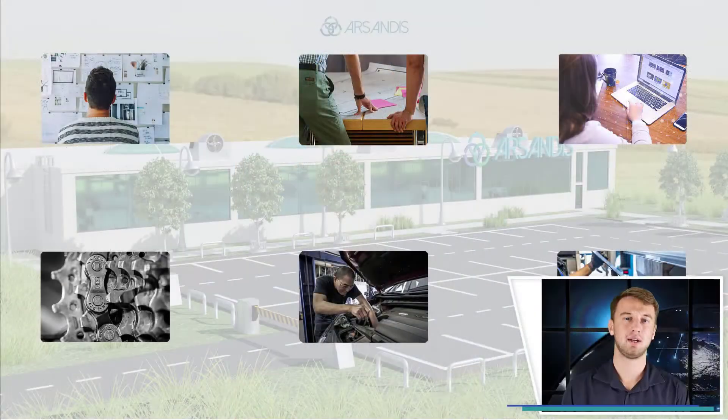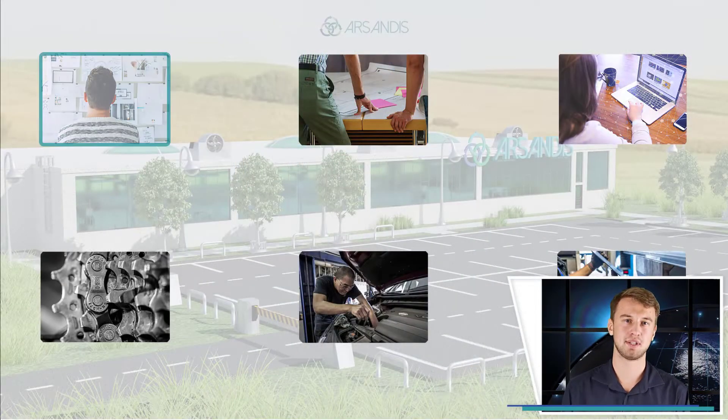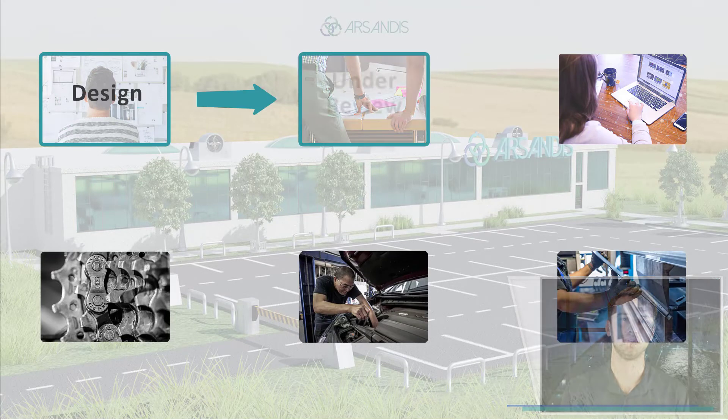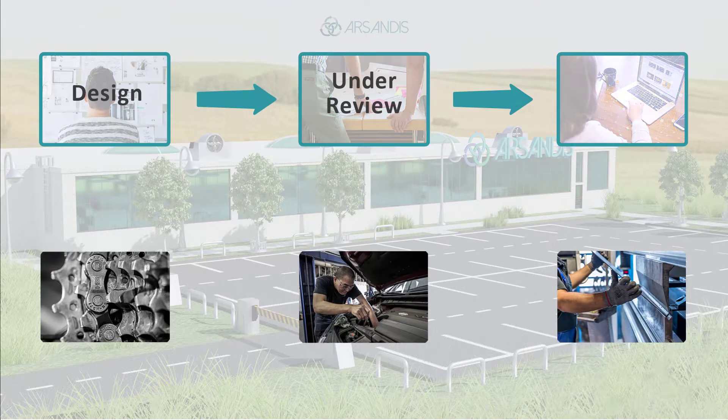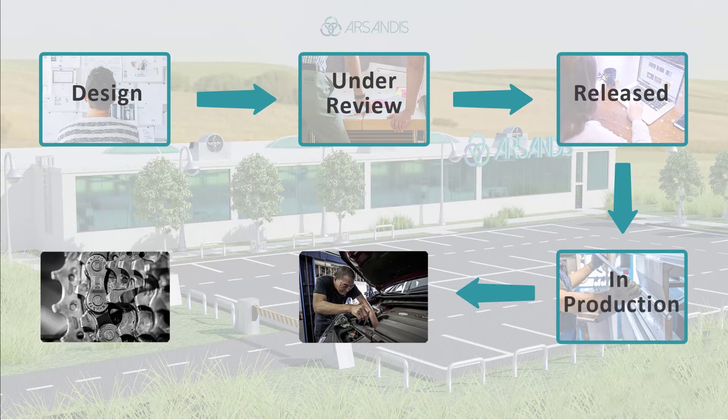Let's take an example. A product could be an engine, a pump, or a packaging machine. Just like any living being, a product has its own life. At the beginning, life is precarious. With time, products like humans become more mature. The life of a product starts with a design phase and can be followed by states like under review, released, in production, in service, and obsolete.